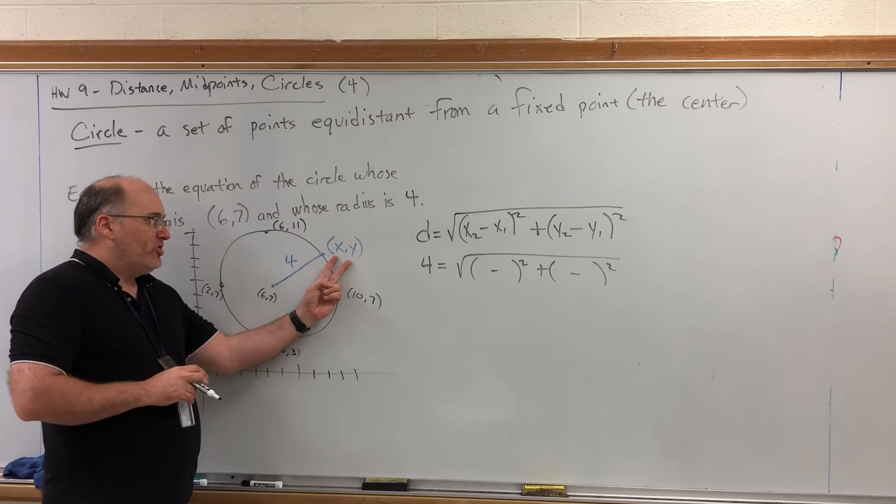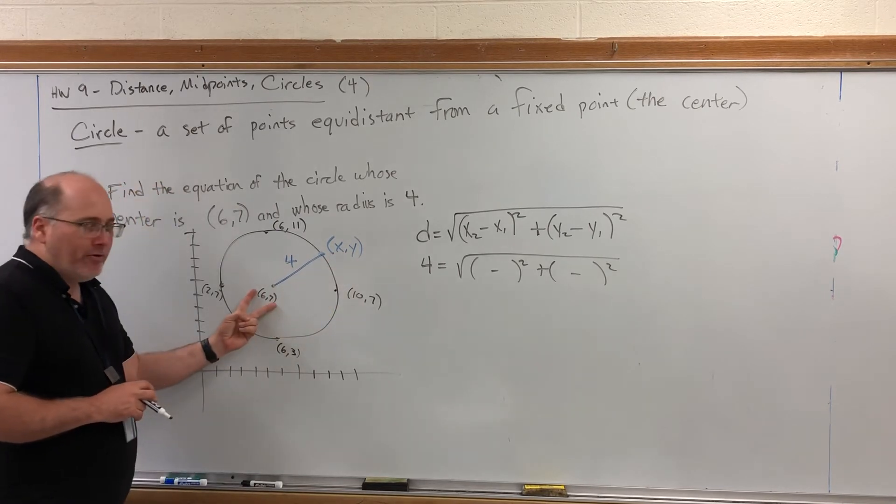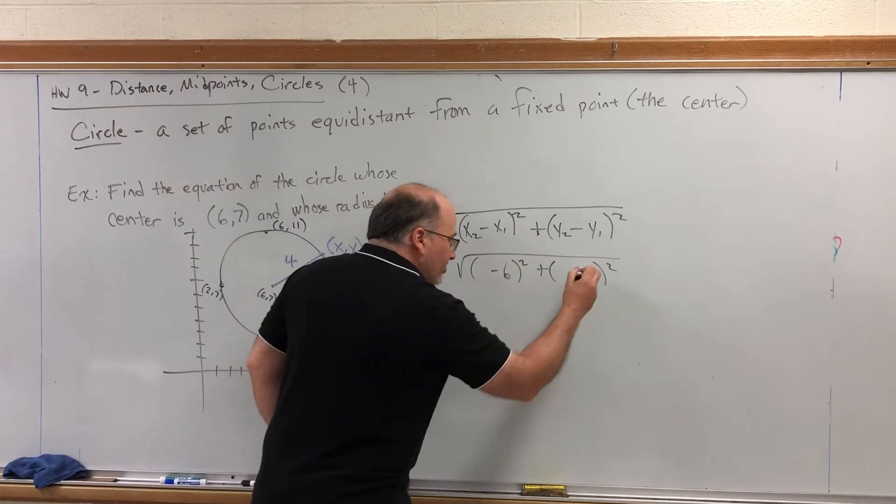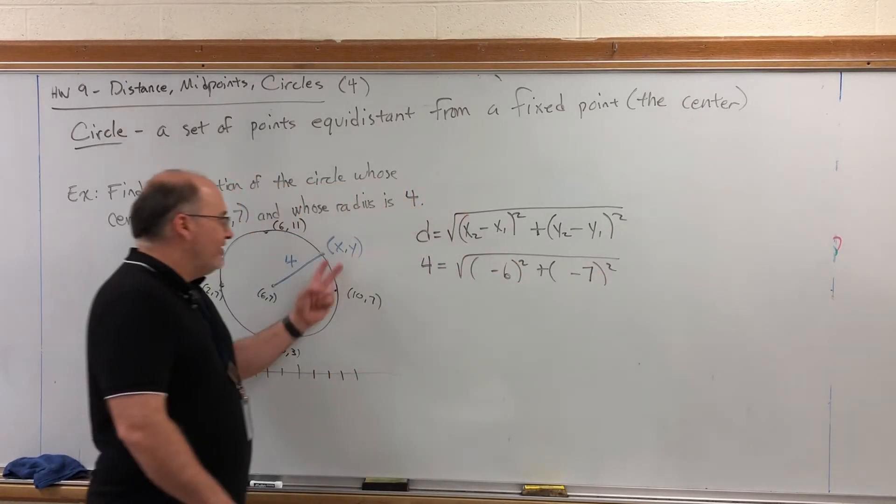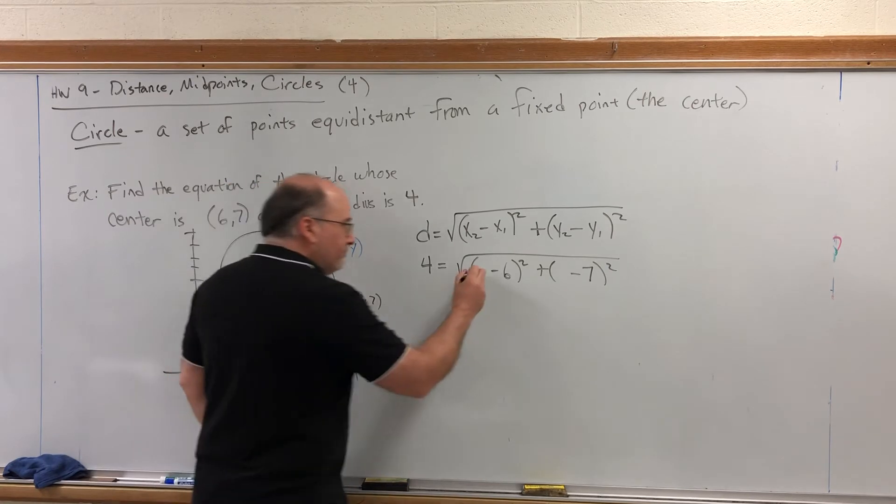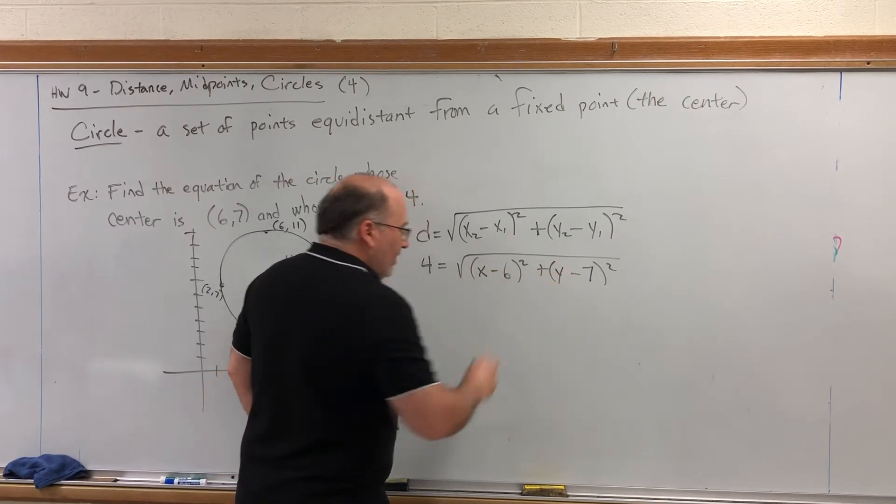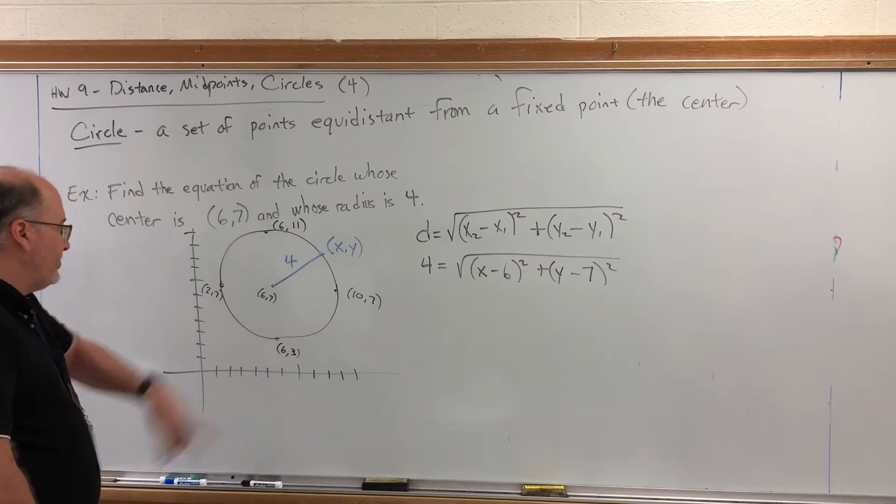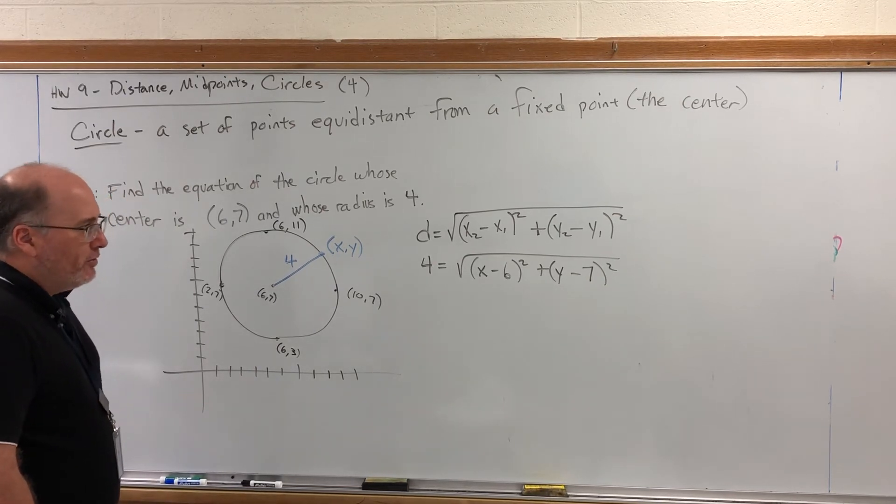Let's call this our second point and the center our first point. So, first x and first y. Second x and second y. At this point, we technically have the equation of the circle. It's an equation of all the points that are on the circle. But to make it look prettier,